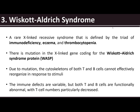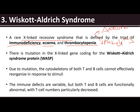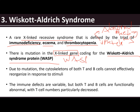Then we have Wiskott-Aldrich syndrome (WAS), a rare X-linked recessive syndrome defined by a triad of immunodeficiency, eczema, and thrombocytopenia — decreased platelets. This is caused by a mutation in the X-linked gene coding for the Wiskott-Aldrich syndrome protein (WASP). Due to this mutation, the cytoskeletons of both T and B cells cannot effectively reorganize in response to stimuli. Both T and B cells are functionally abnormal, with T cell numbers particularly decreased.